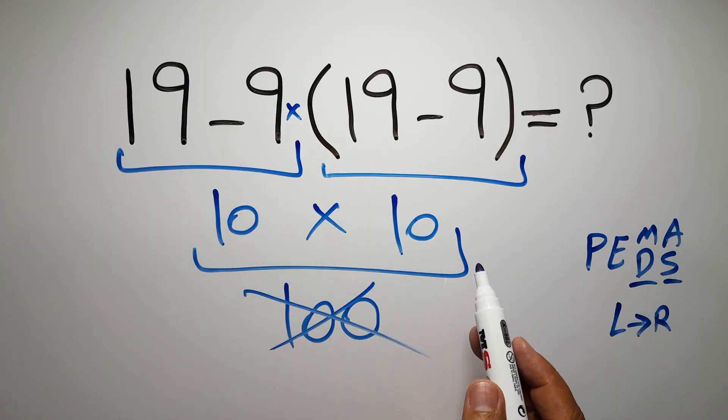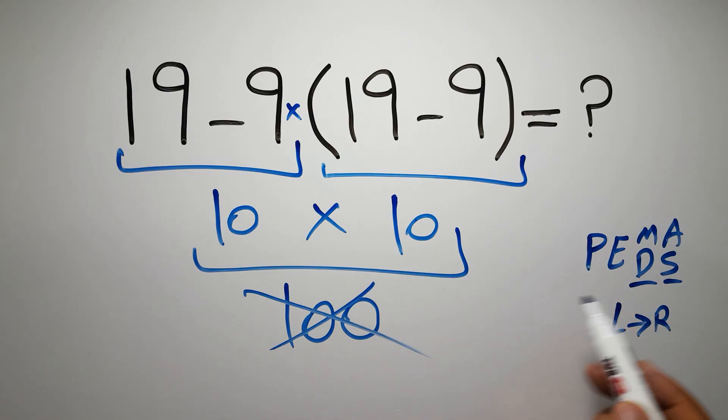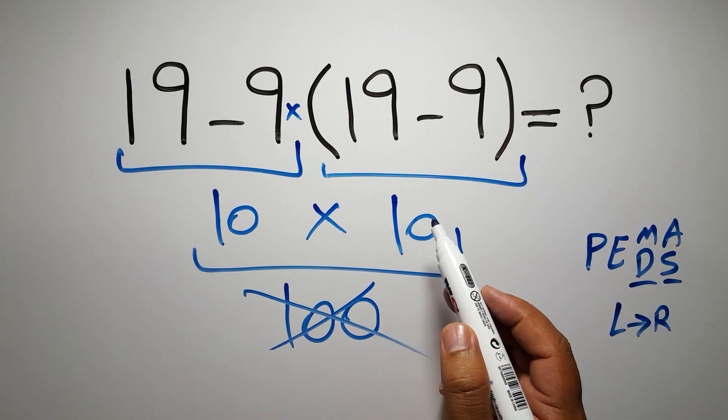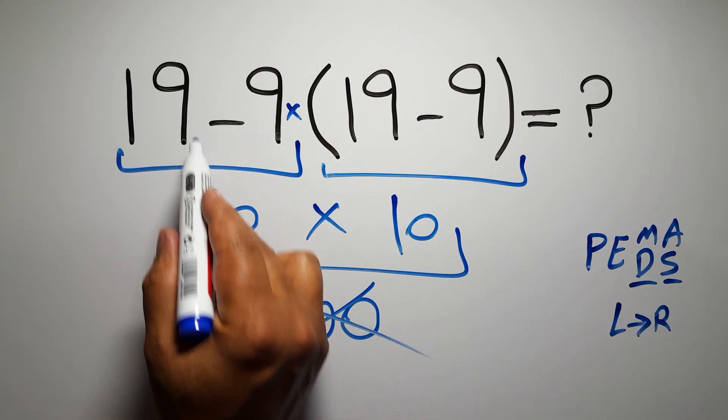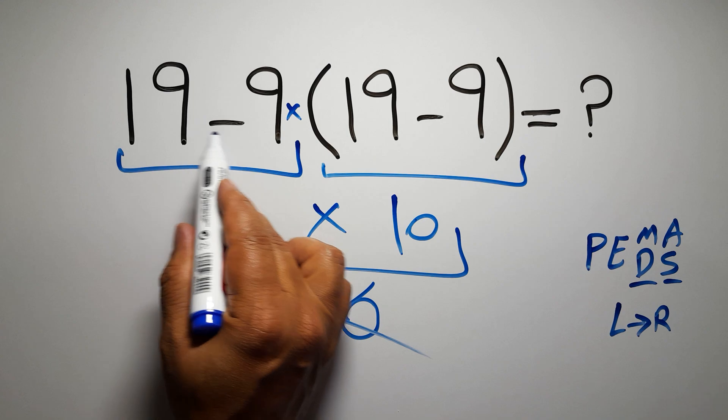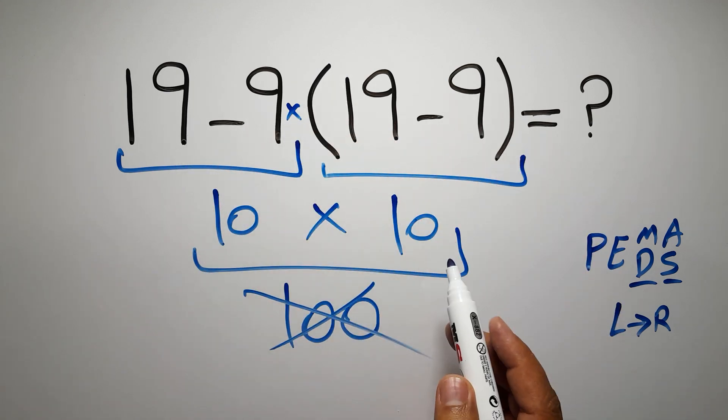So here, according to the PEMDAS, first we have to do this parentheses, then this multiplication, and finally this subtraction. If we do this subtraction before this multiplication or this parentheses, it is wrong.